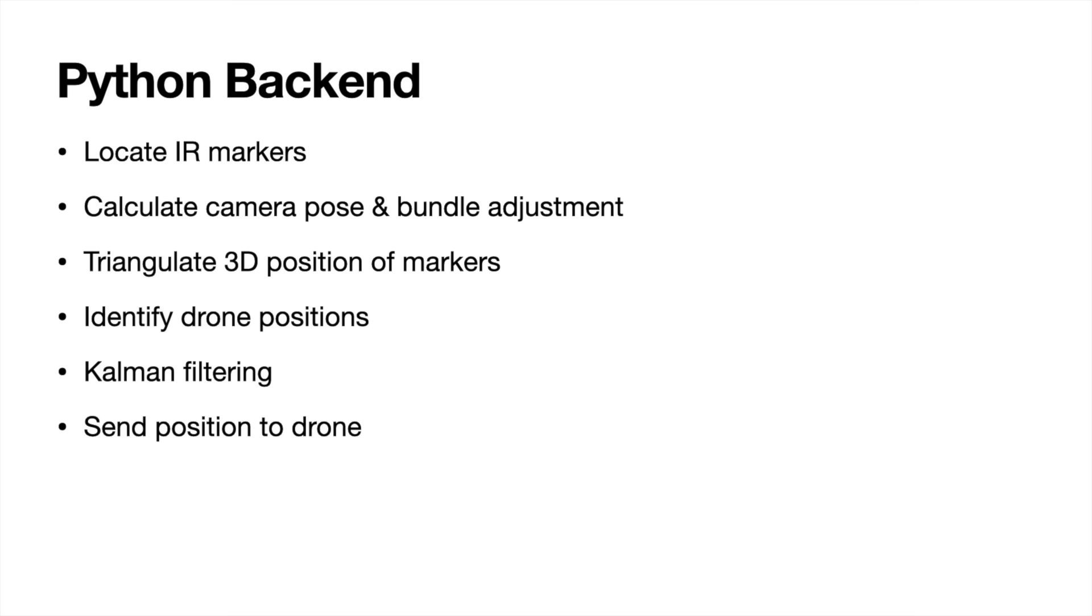So next, we'll talk about the Python backend, which has quite a lot to do. Firstly, we have to locate the infrared markers from the video. Then we calculate the camera's positions in space, triangulate the 3D position of the markers in space, and then identify where the drones are, do some filtering, and then send these positions to the drone.